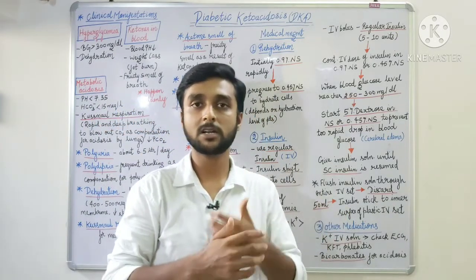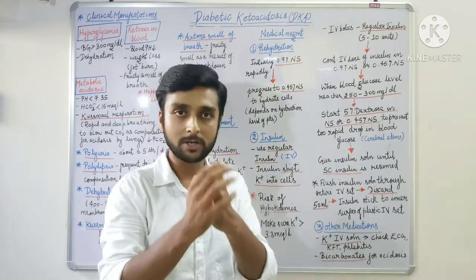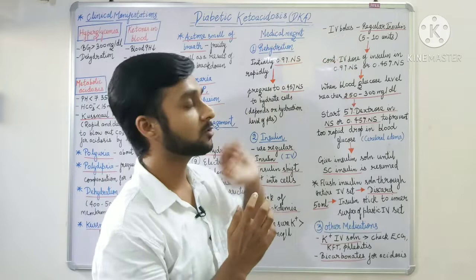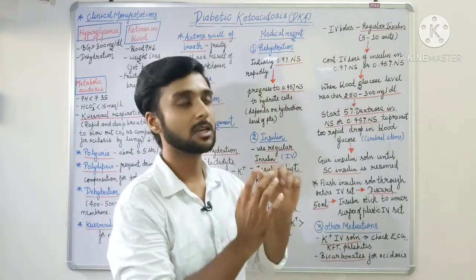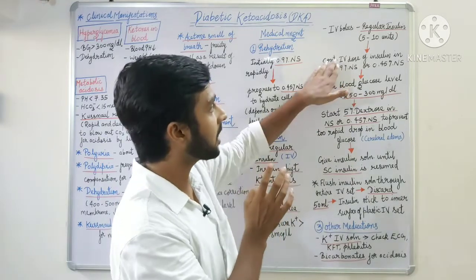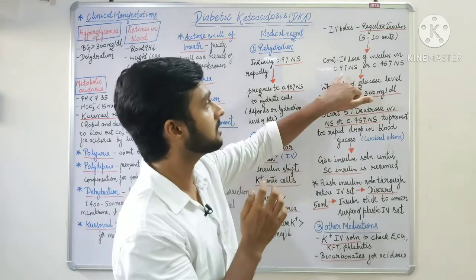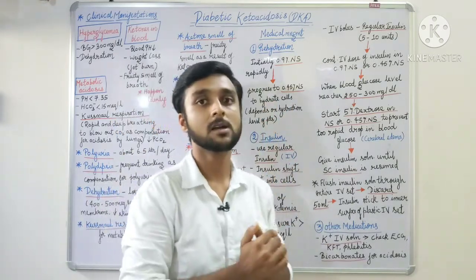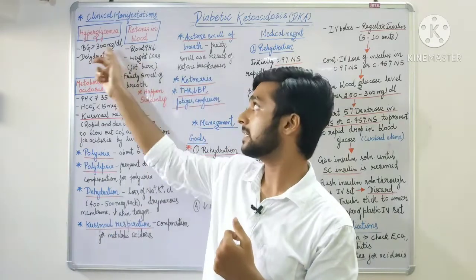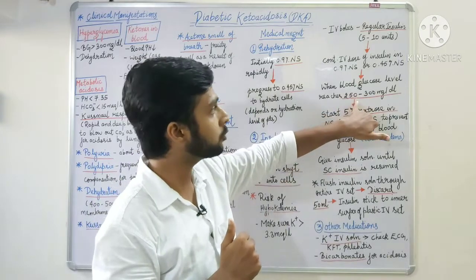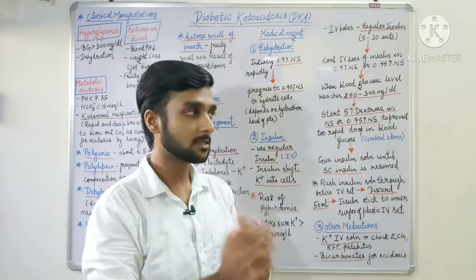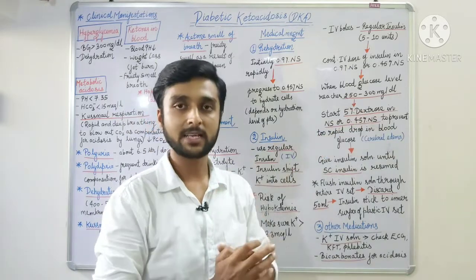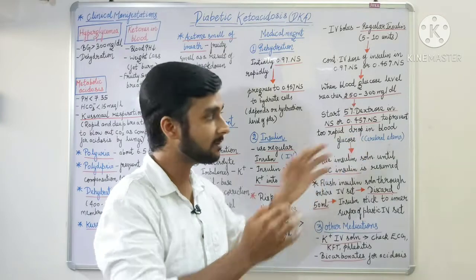We have to keep an eye on potassium because of the risk of hypokalemia, which can lead to cardiac dysrhythmias. For regular insulin, we first give 5–10 units rapidly, then continue the insulin dose mixed in 0.9% NS or 0.45% NS. After that, we check blood glucose level. Since DKA blood glucose was more than 300 mg/dL, when it comes down to 250–300 mg/dL, we will start 5% dextrose in NS or 5% dextrose in 0.45% NS.